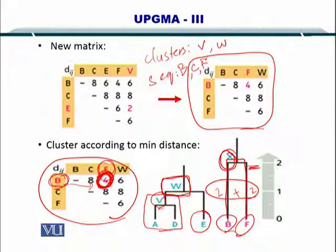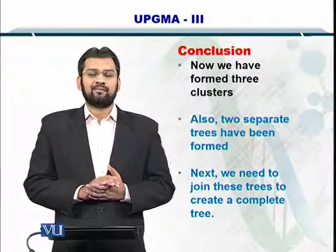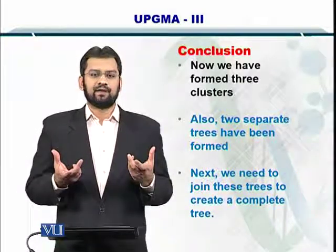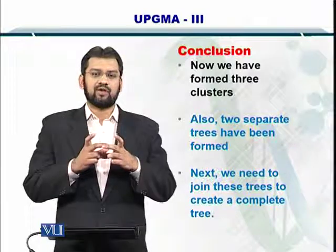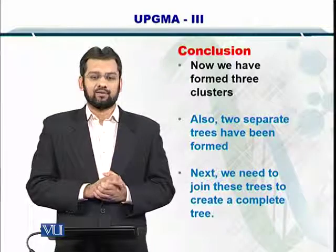So now you have three clusters, V, W and X and only C remains in the distance matrix. So three clusters and one sequence remain. So now the things to remember are that two trees have been formed, two separate trees. And now we would want to join them together using the second component in the UPGMA algorithm.